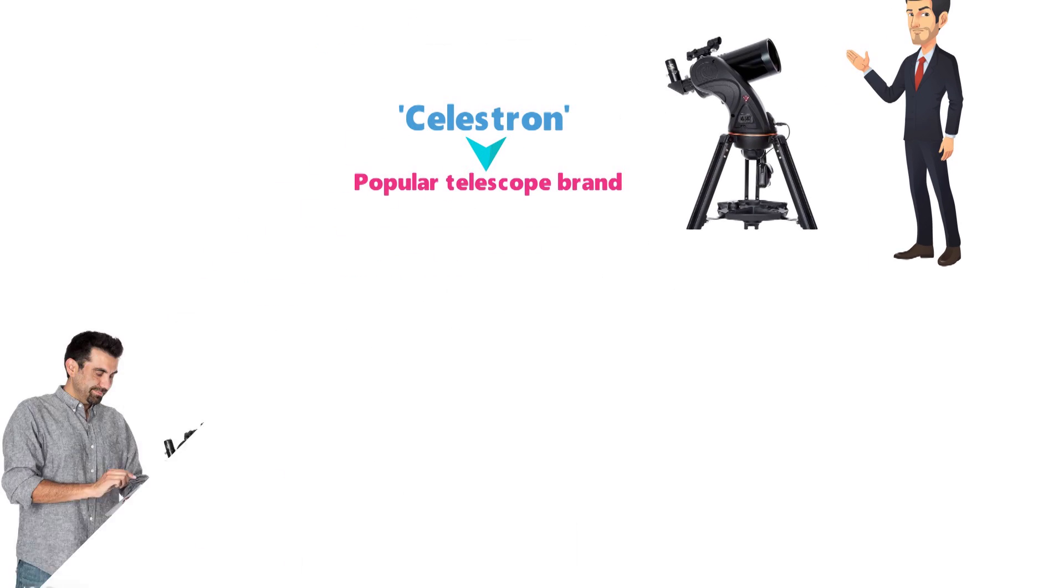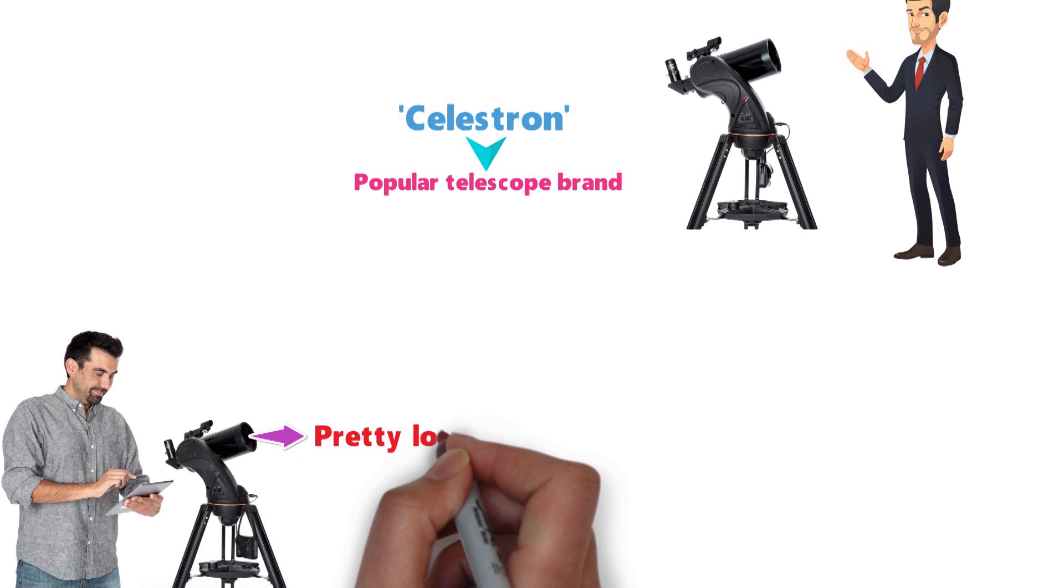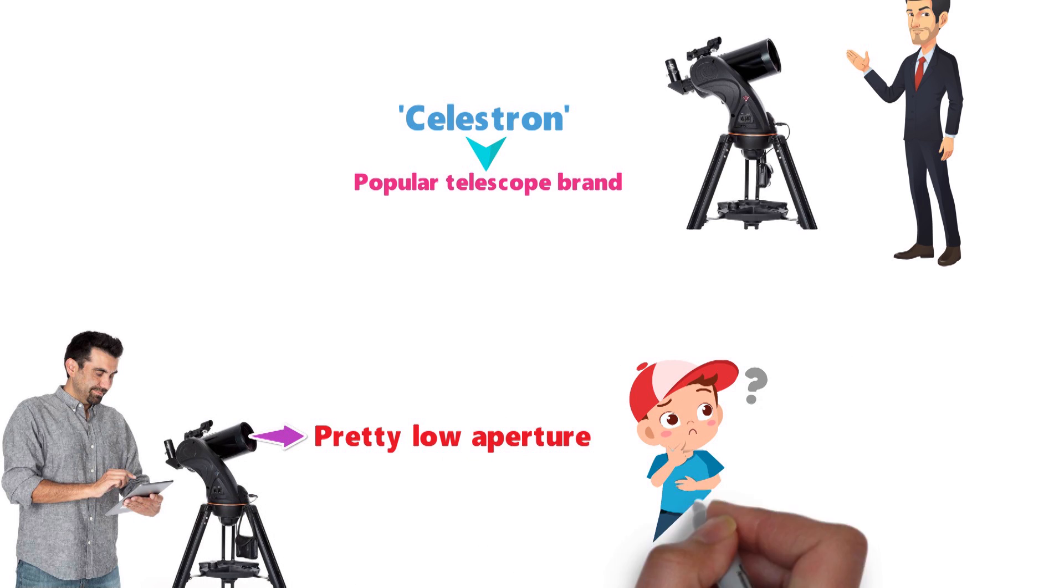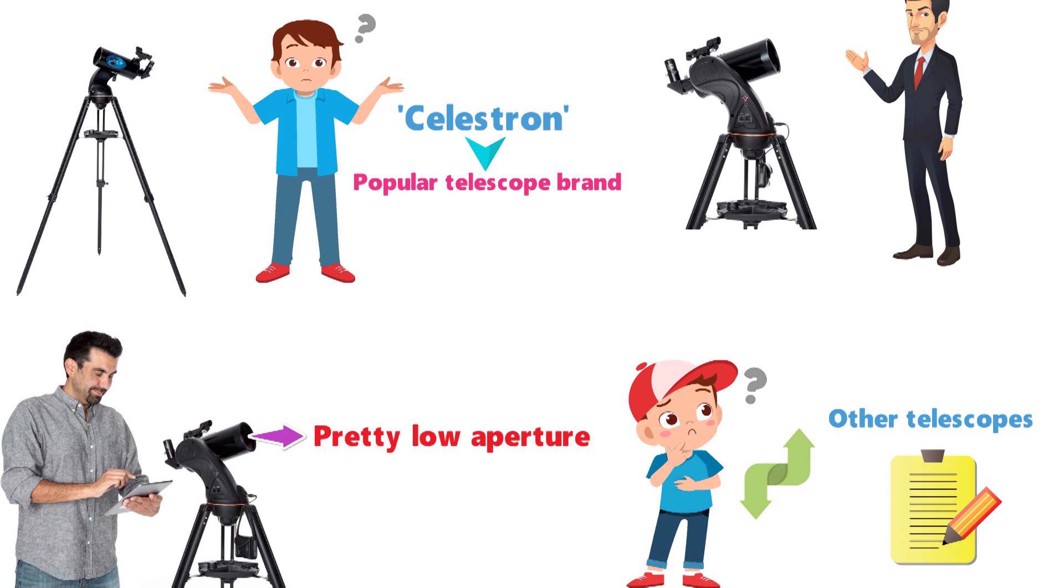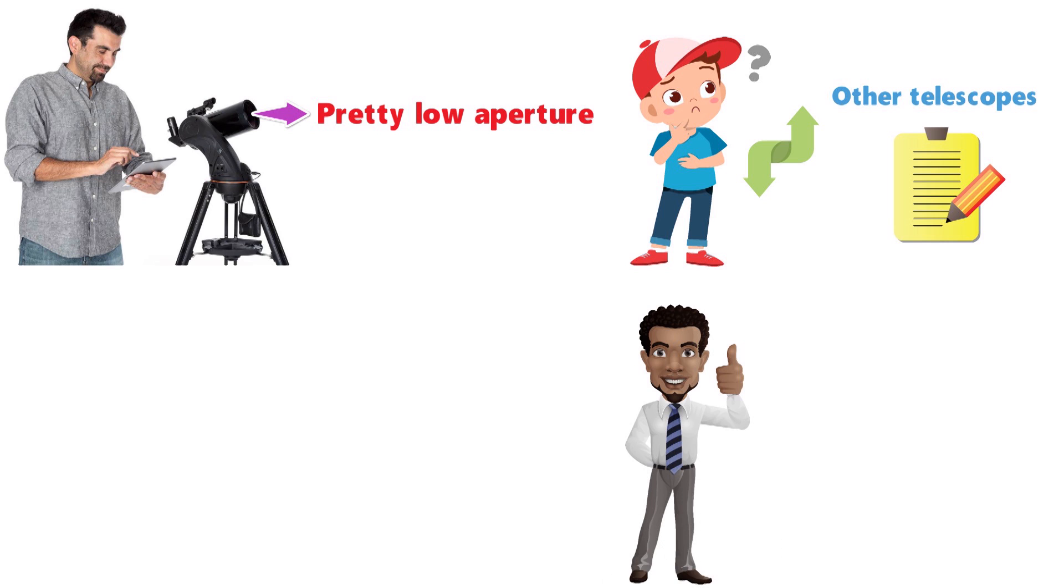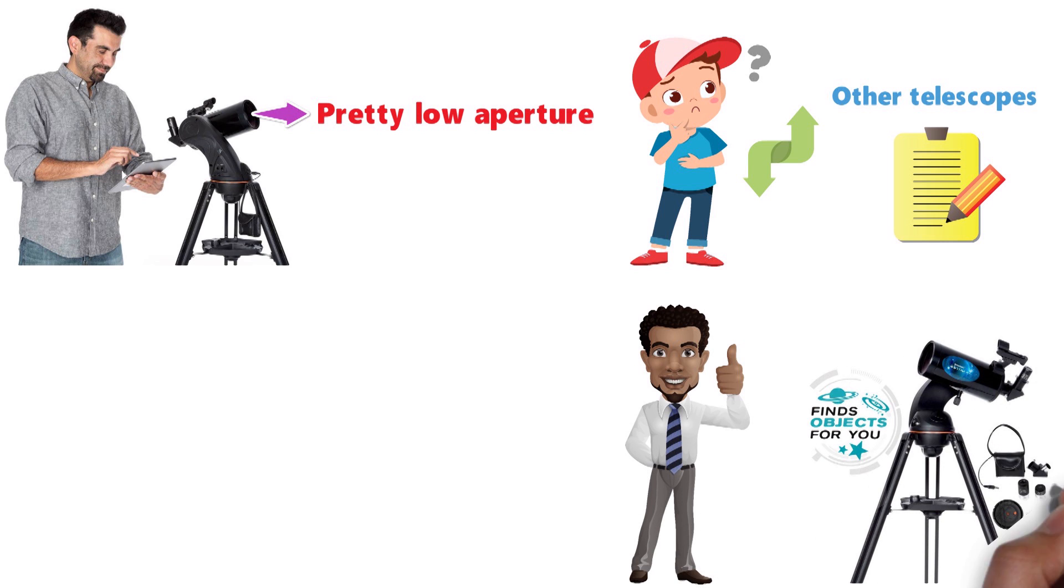The main issue that I can see easily with the Astrofi is that it has a pretty low aperture. This is especially true if you compare it with other telescopes that I've listed, so it's worth considering this if you've been looking at the Astrofi. But having used this telescope myself, it does a good job for seeing close-up sky objects.